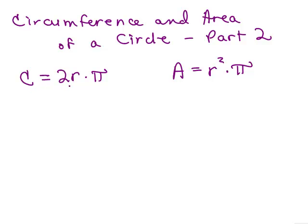Remember, if you want the circumference, you're going to double the radius and multiply by pi. And for the area, you're going to square the radius and multiply by pi.